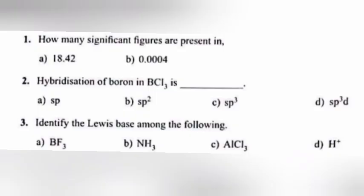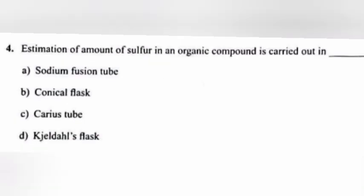How many significant figures are present in: a) 18.42? b) 0.0004? Answer: a) 4, b) 1. Question 2: Hybridization of boron in BCl3 is? Answer: sp2. Question 3: Identify the Lewis base among the following. Answer: NH3.